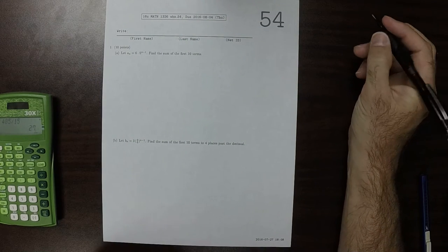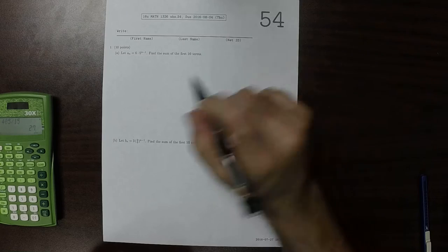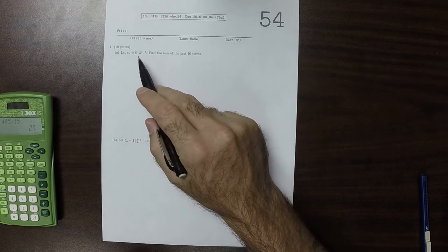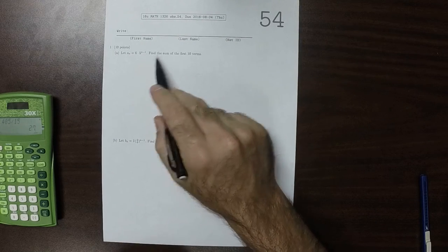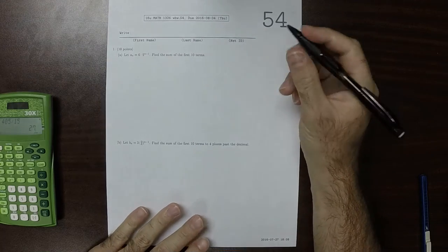This is the solution to written homework 54. We are given a geometric sequence and we're requested to find the sum of the first ten terms.